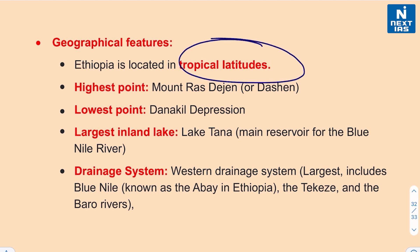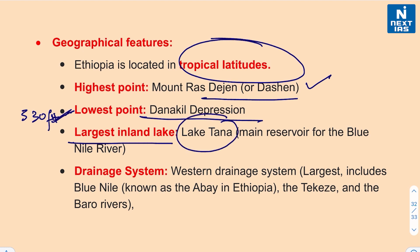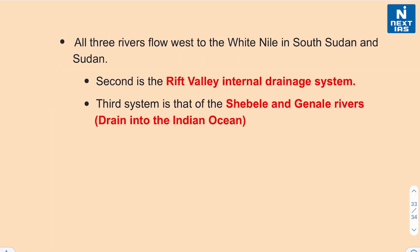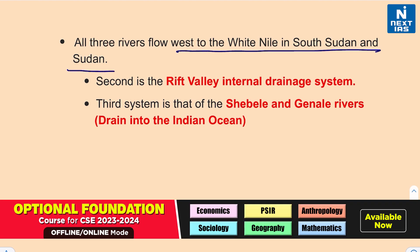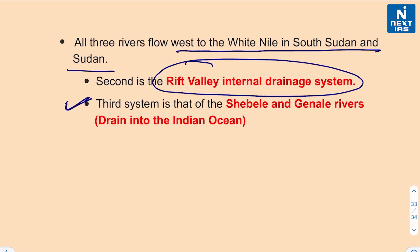Ethiopia is located in the tropical latitudes. The highest point is Mount Ras Dejen, also known as Dashen. The Danakil Depression is the lowest point in Ethiopia — it is the hottest place on earth in terms of year-round average temperature and one of the lowest places, around 100 meters or 330 feet below sea level. The largest inland lake is Lake Tana, which is the main reservoir for the Blue Nile River. The western drainage system — the largest — includes the Blue Nile (also known as Abay in Ethiopia) and the Tekezé and Baro Rivers, all flowing west to the White Nile in South Sudan and Sudan. There is also the Rift Valley internal drainage system, and a third system of the Shebelle and Genale rivers draining into the Indian Ocean.